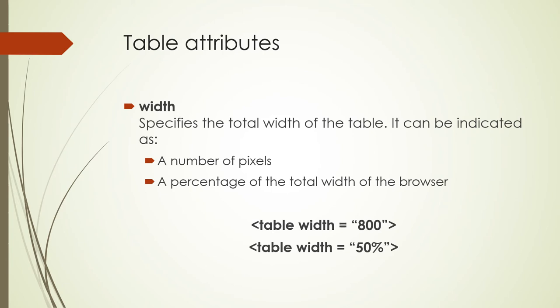All of these table attributes are added in the opening table tag, so you can have many different attributes added there — for example, align equals center, border equals five, bordercolor equals red, and so on, all within the opening table tag.